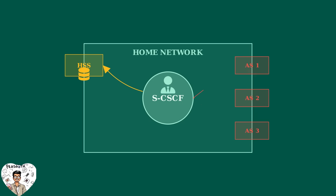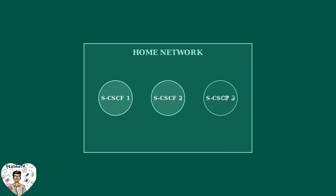The SCSCF also decides when to forward your requests to application servers. These servers provide specific services like voice calls, video calling, or messaging. The SCSCF acts like a smart traffic director. For high availability and load distribution, there can be multiple SCSCFs in a network. A load balancer distributes users across different SCSCFs to ensure no single server gets overwhelmed.